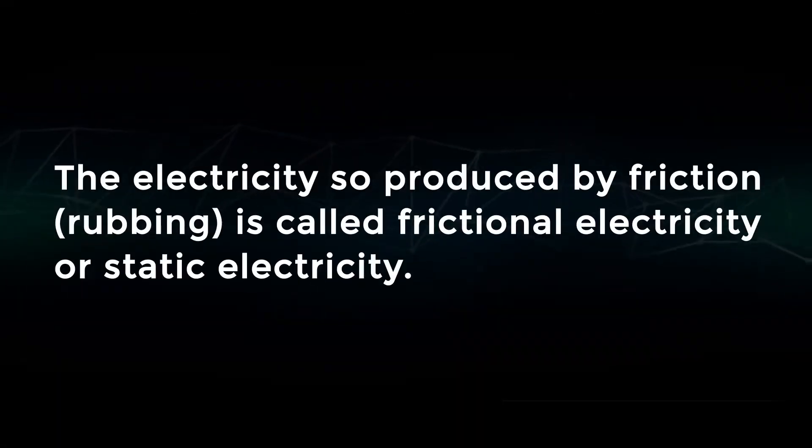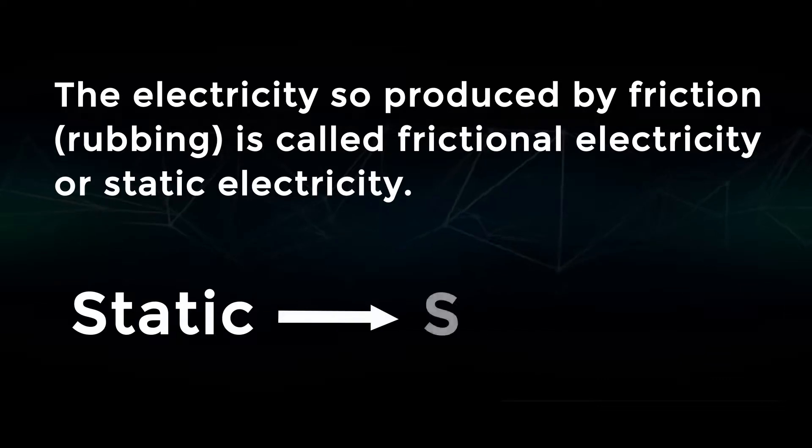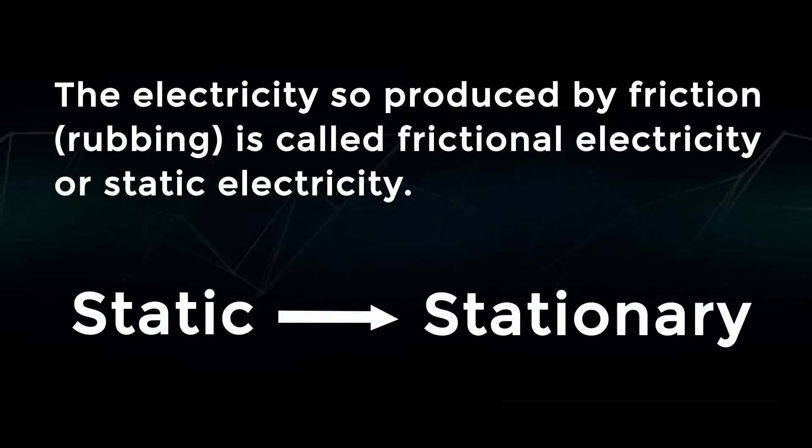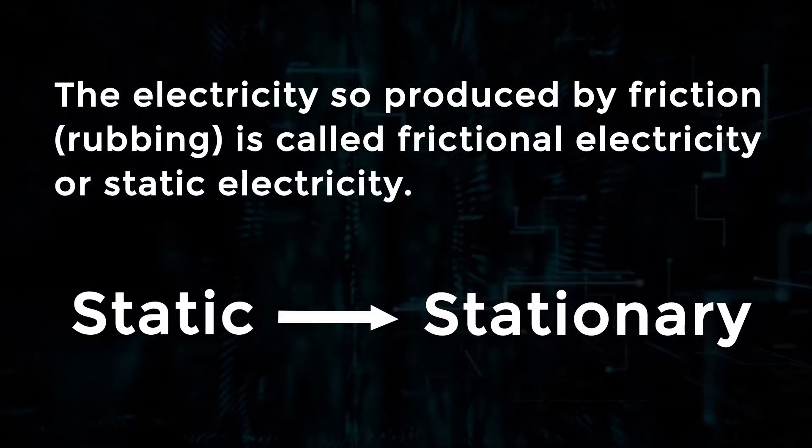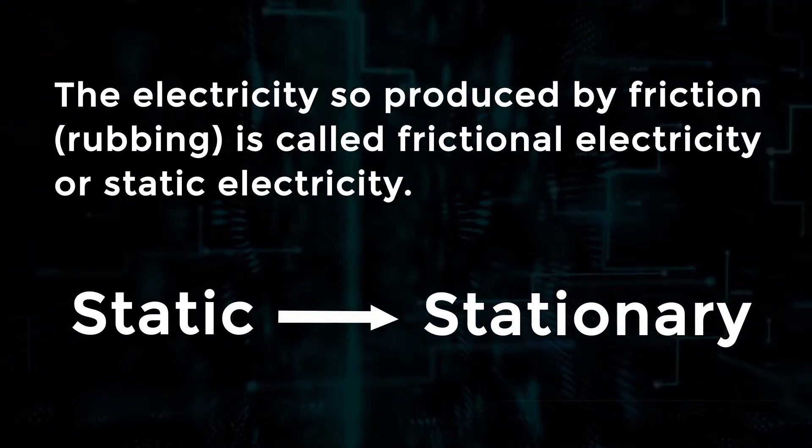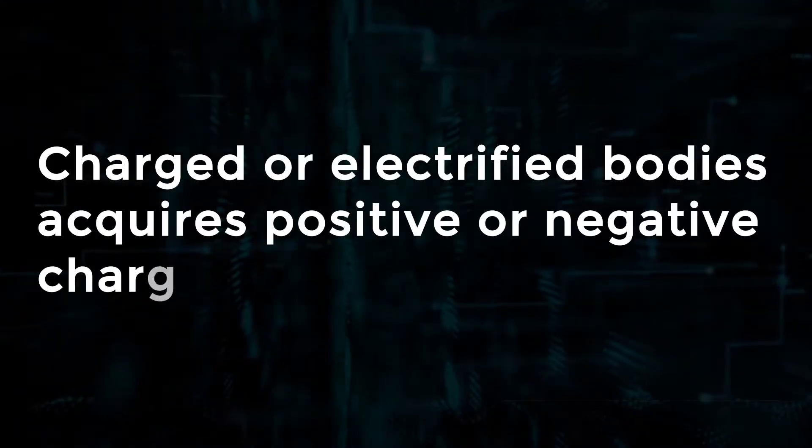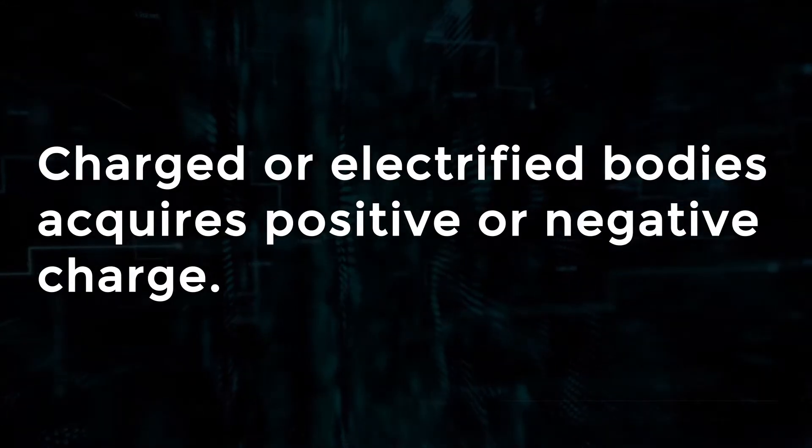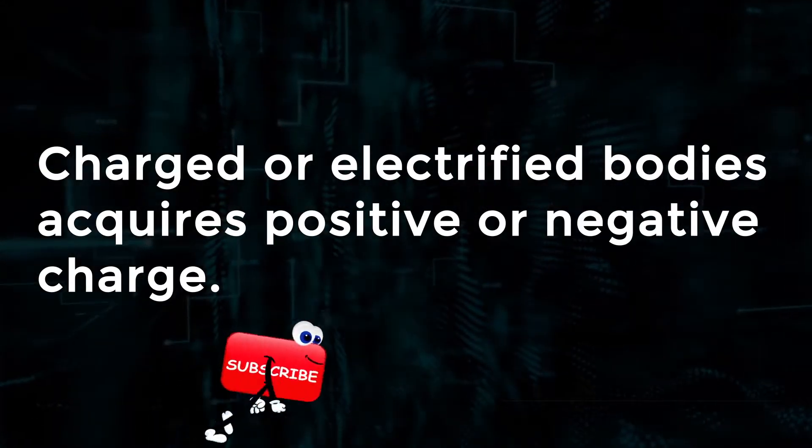The electricity produced by friction or rubbing is called frictional electricity or static electricity. The word static means stationary or not moving, since the charges do not flow through the conductor but only transfer from one substance to another. The material acquires positive or negative charge and is called charged or electrified bodies.